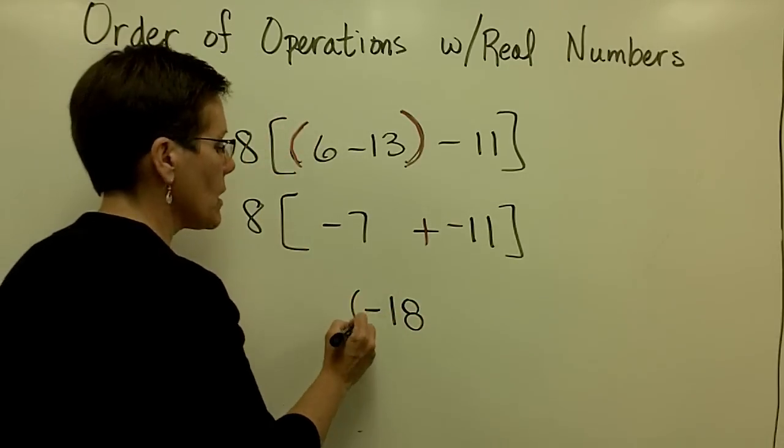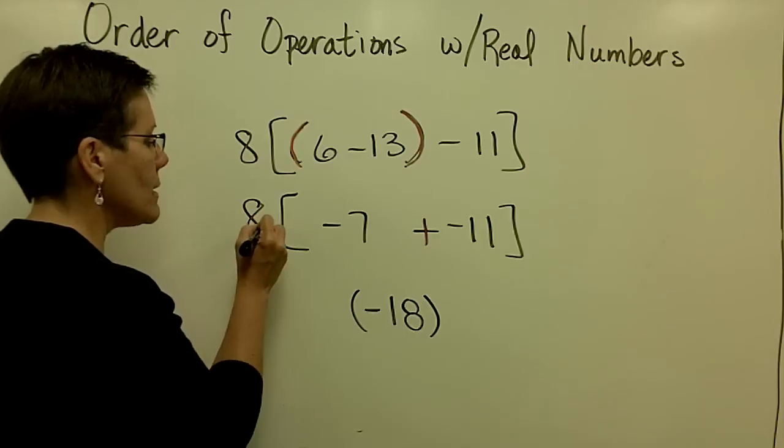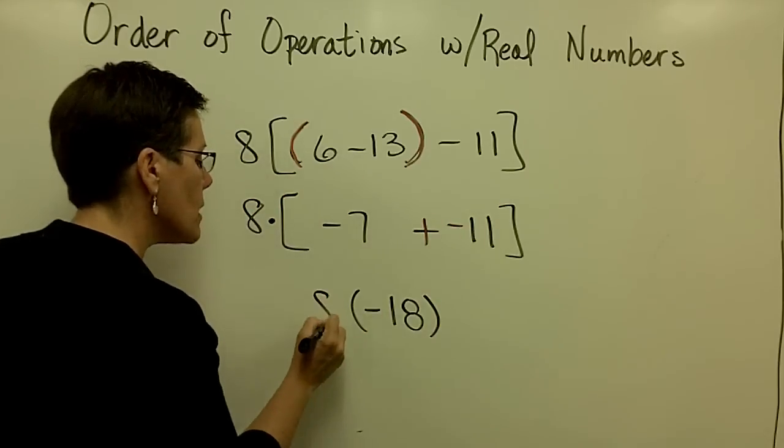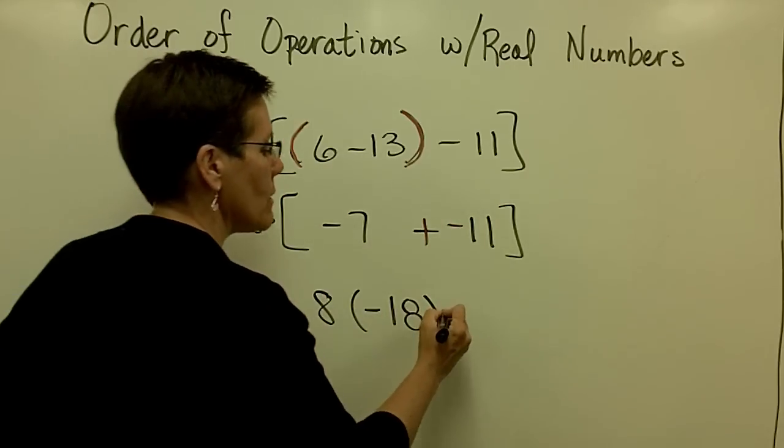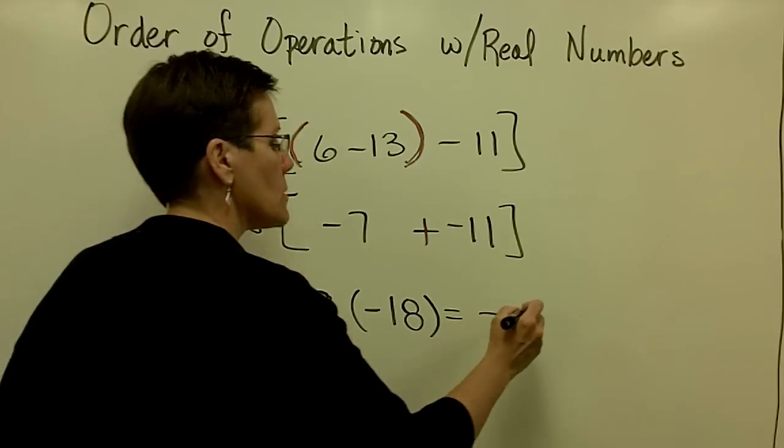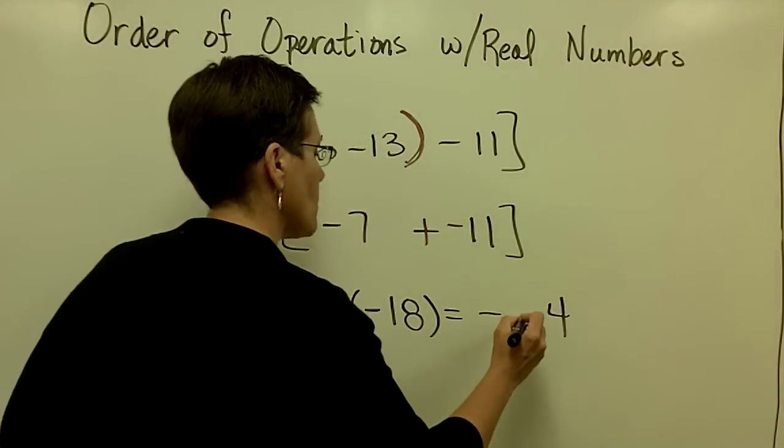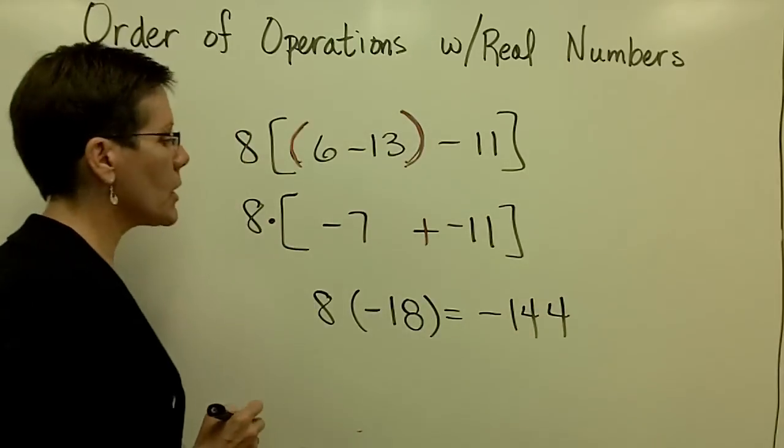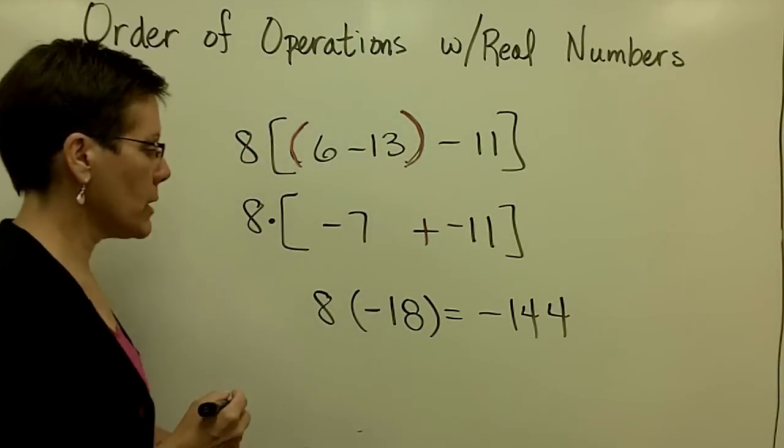This square bracket can become a rounded bracket because it's 8 times whatever's in there. So 8 times that negative number is a negative result. And I believe that answer is going to be 144. A negative 144.